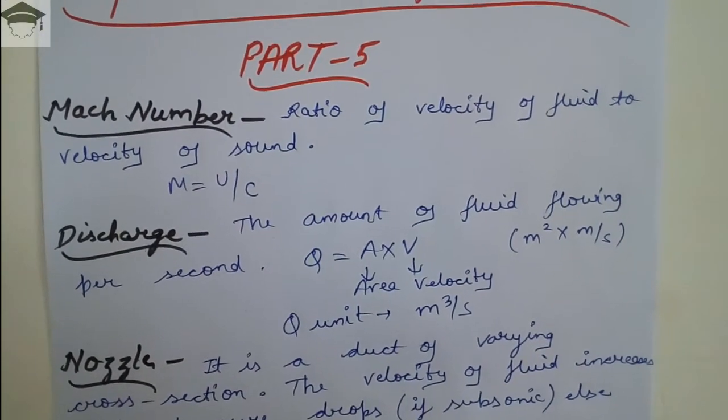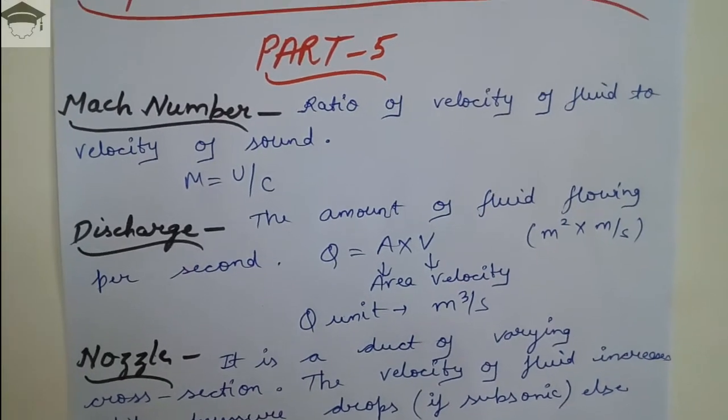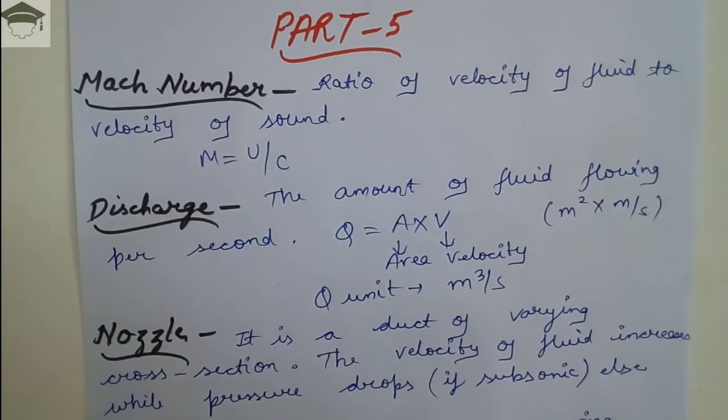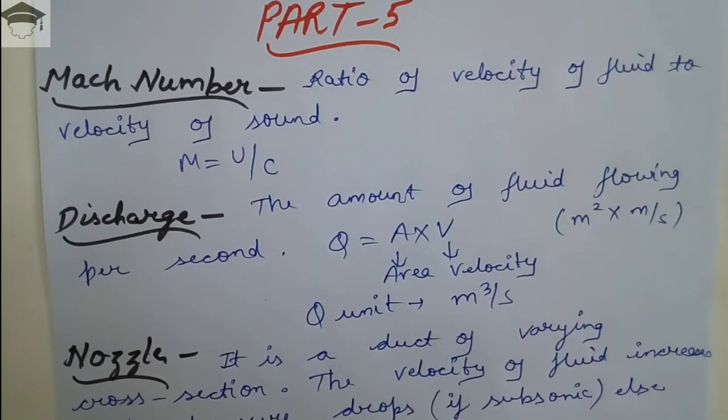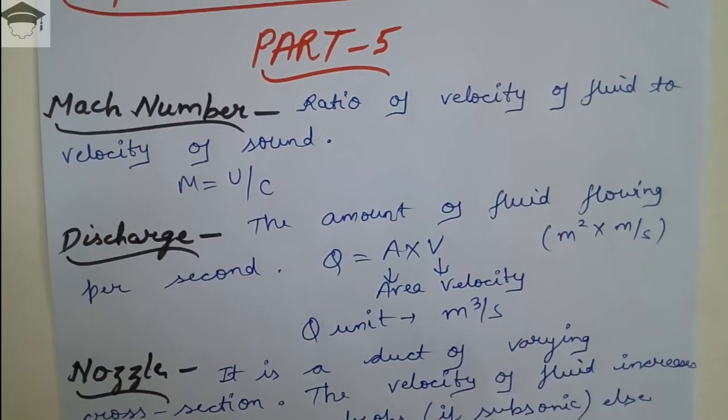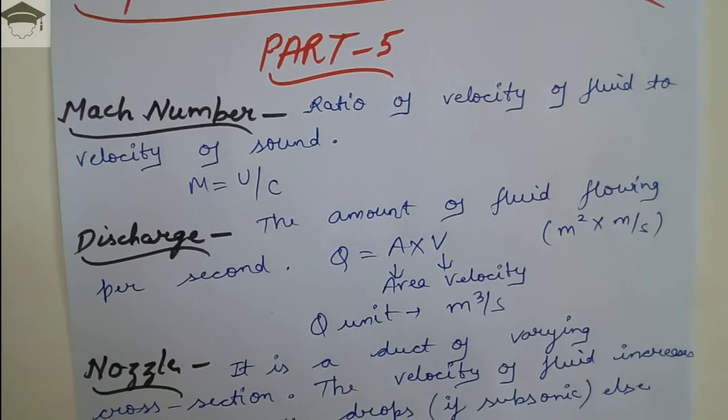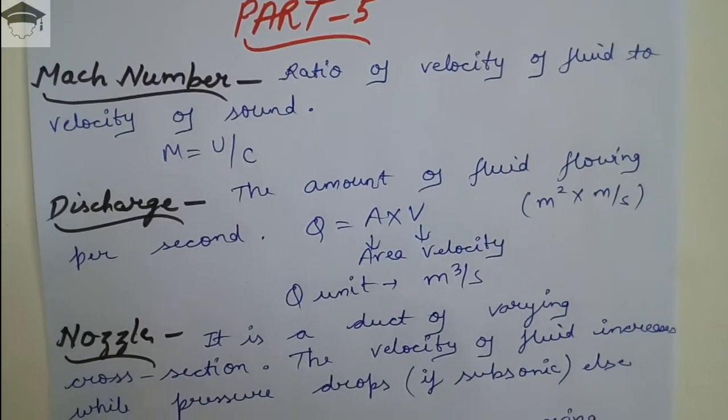Discharge: the amount of fluid flowing per second. Its symbol is capital Q, and discharge is equal to area into velocity, Q = A × V. The unit is meter cube per second.